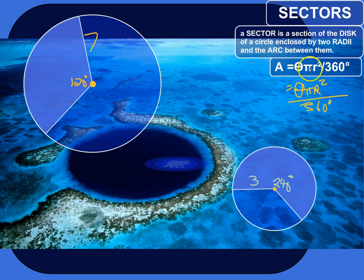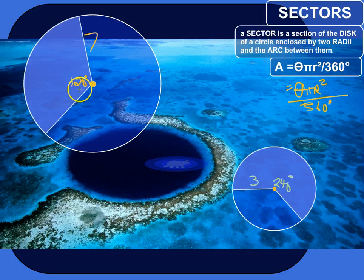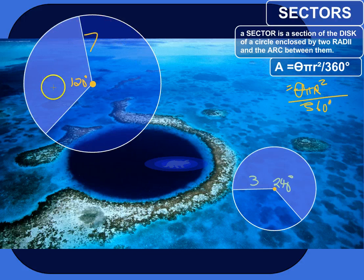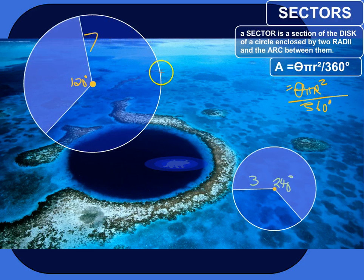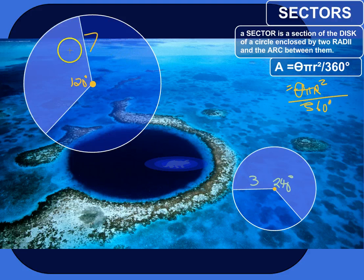Let me show you where that comes from. Here's a sector of a circle, and it's got an angle measurement of 120 degrees. If I were to take the whole area of this circle, the area of the circle is pi r squared by definition. And if I had a sector that's the full 360 degrees, its area would just be the area of the circle, pi r squared.